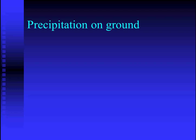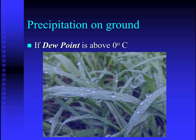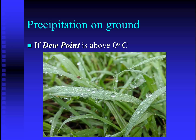Let's start out by talking about precipitation on the ground. What happens if the dew point is above the freezing point of water? Well, it should come as no surprise that dew will occur. Dew forms through condensation when water vapor condenses on the surface of things like plants and grasses.